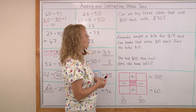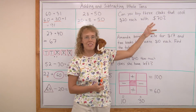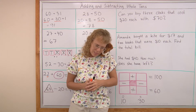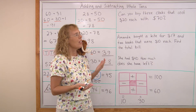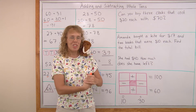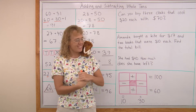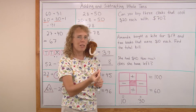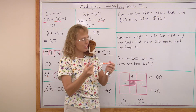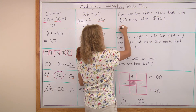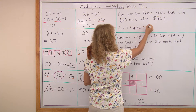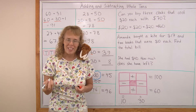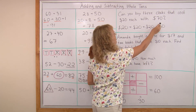Can you buy 3 clocks that cost $20 each with $70? Matthew is asking why would anybody buy 3 clocks — well, if you have a teacher going to teach students how to read the clock. Those 3 clocks cost $20 each. So how much would be the total bill? You can add $20 and $20 and $20: that would be 6 tens, or $60. So yes, you can buy 3 clocks with $70 — you even have $10 left.